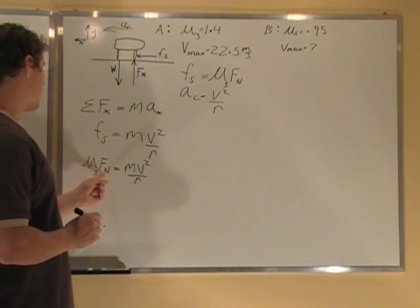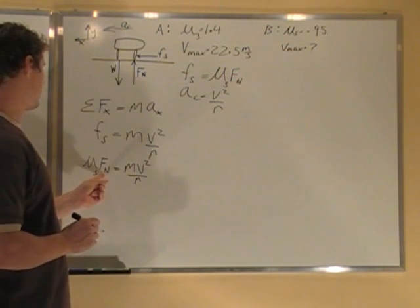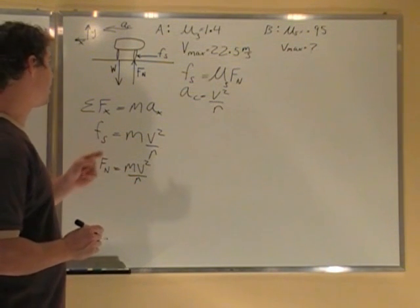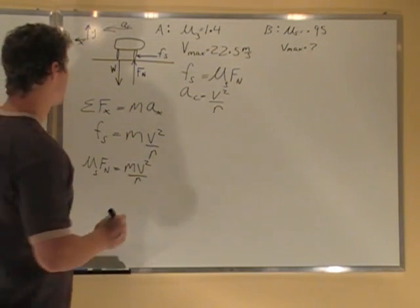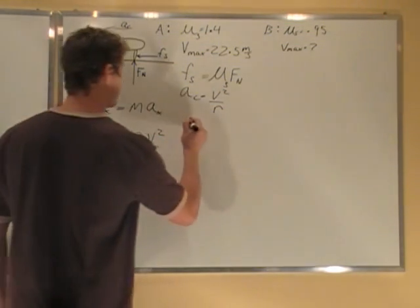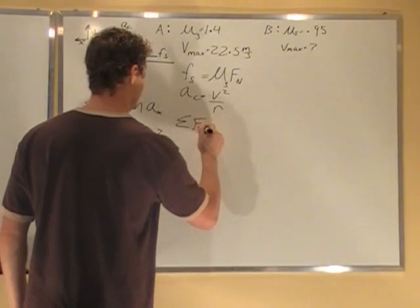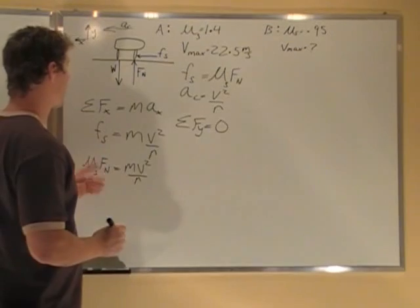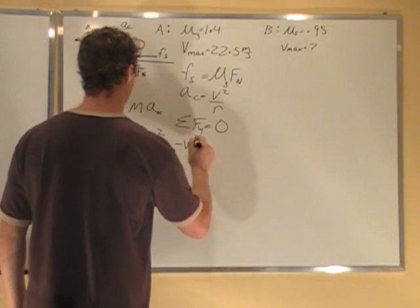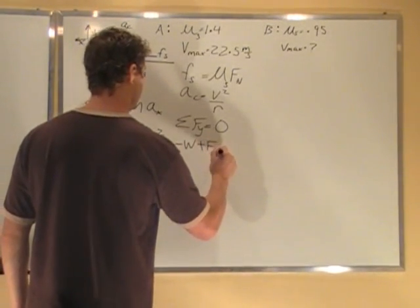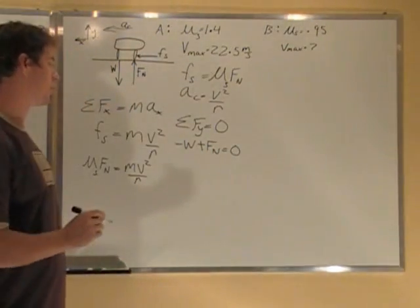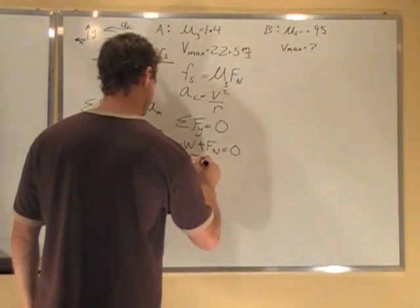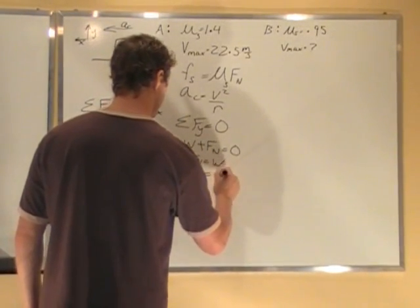Now, the one thing I'm missing is Fn, also missing M and R. But if I can sum the forces in the Y direction, I can figure out what Fn is. There's no other forces in the Y direction, so some of the forces in the Y equals zero because there's no Y acceleration. I can just say negative W plus normal force equals zero. From this, I know that Fn is equal to W. My normal force is just equal to my weight, which is Mg.